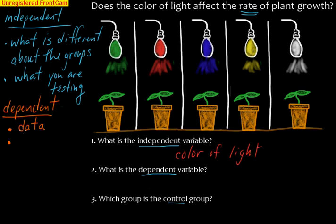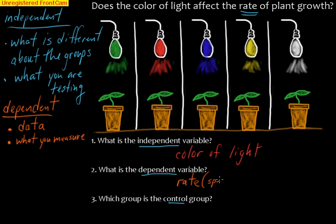The dependent variable gives you the data because this is what you measure. So what are we measuring specifically here? I underlined the word 'rate' up here. What we're specifically measuring is the rate — which can also be thought of as the speed — the speed of plant growth.